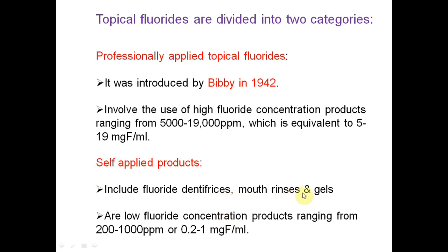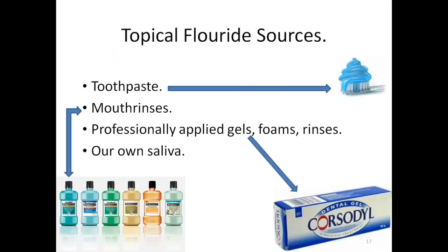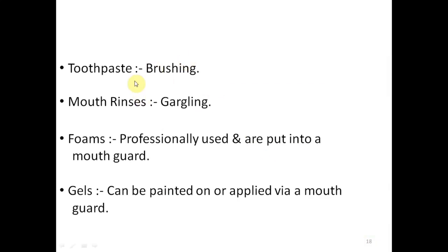For professional application, fluoride is applied using a vehicle that is either an aqueous solution or a gel. Gel adheres to the teeth and eliminates the need for continuous wetting. Thixotropic solutions are a special type of gel with high viscosity under storage conditions that becomes fluid under stress when applied with pressure, allowing it to enter interdental spaces. The basic sources of topical fluorides include toothpaste, mouth rinses, professionally applied gels, foams, rinses, varnishes, and fluoride in saliva.